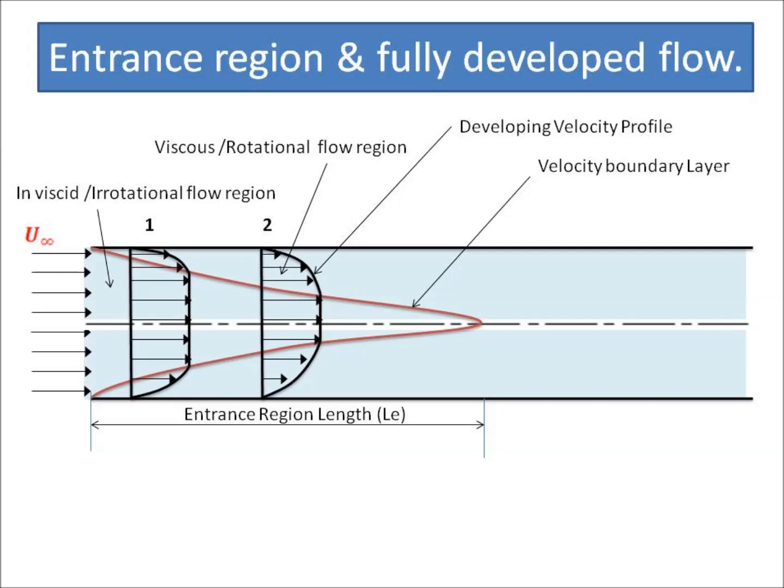The viscous region propagates towards the center in the direction of flow, forming a shrinking central core of non-viscous flow, which vanishes at a length called the entrance region length, Le. At section 1, if we plot velocity variation in the radial direction, the velocity is constant in the non-viscous region, decreases through the viscous region, and is zero at the pipe wall. At section 2, as the viscous region has propagated further, the central core diameter decreases — more viscous region and less non-viscous region are observed in the flow direction.